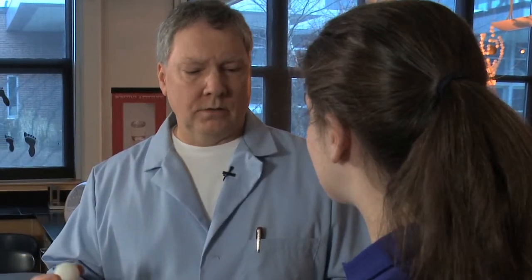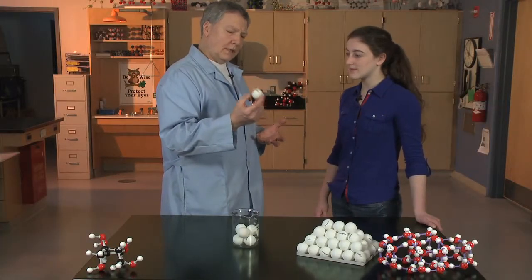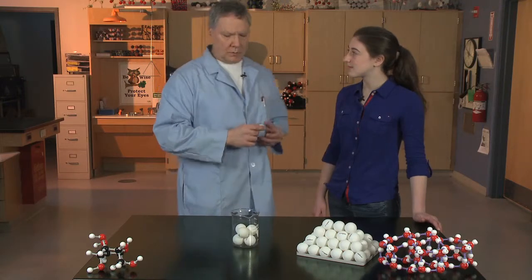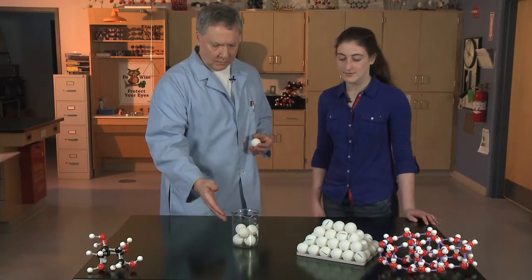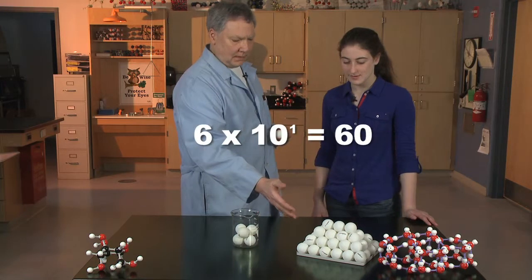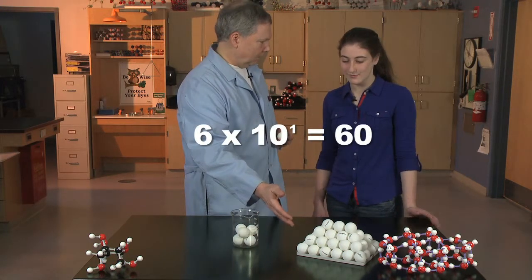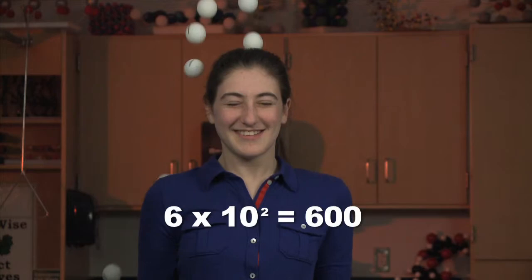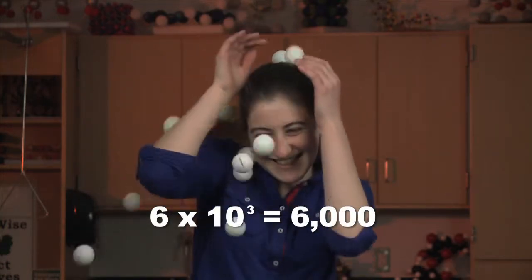Atoms and molecules are too small to see or even imagine. But a ping-pong ball — that's a particle you can really wrap your head around. And look what just 1 power of 10 does. Here are 6 ping-pong balls, or 6 times 10 to the 1st, or 60 ping-pong balls. Now imagine 6 times 10 squared, or 600, or 6 times 10 cubed — 6,000.